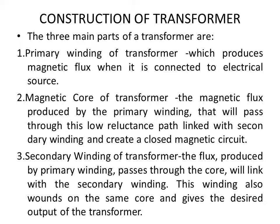Primary winding is connected to the electrical source. The magnetic core provides the path where the magnetic flux produced by the primary winding passes through a low reluctance path, links with the secondary winding, and creates a closed magnetic circuit. The flux produced by the primary winding passes through the core and links with the secondary winding. This winding works on the same core and gives the desired output of the transformer.